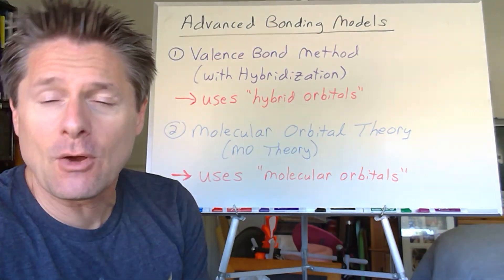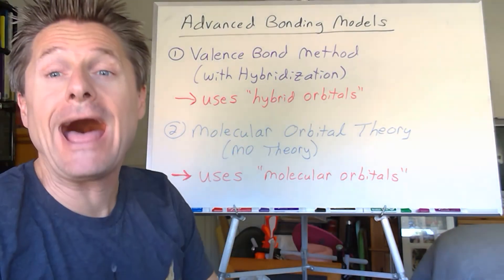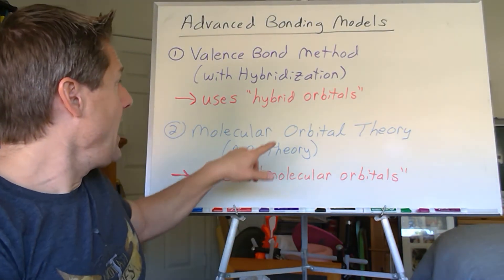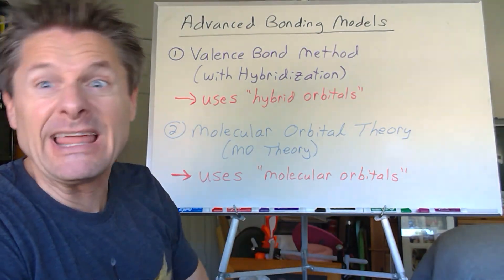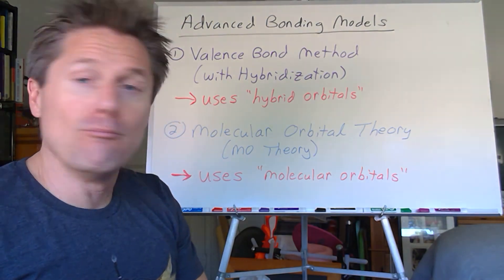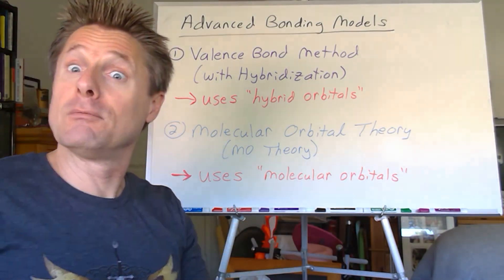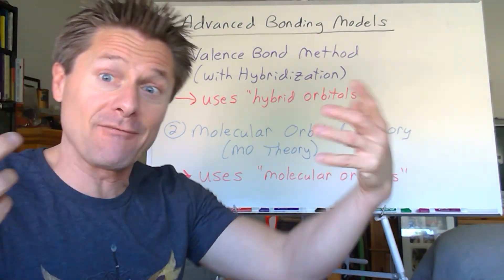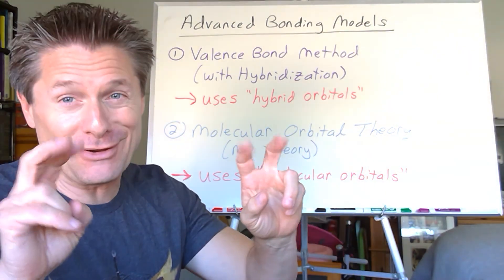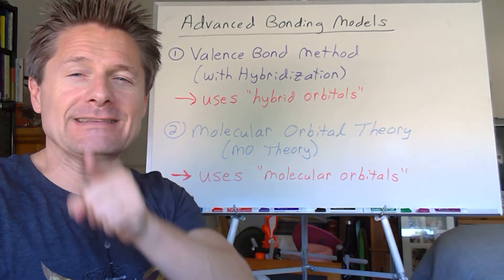The first more sophisticated model will be the valence bond method with hybridization. Instead of using atomic orbitals overlapping, we're going to use hybrid orbitals - you'll learn those in the next video. Then we'll do probably the best model for explaining experimental data: molecular orbital theory, or MO theory. Instead of atomic orbitals or hybridized atomic orbitals, MO theory uses molecular orbitals - which makes sense because when atoms come together and form a molecule, they have molecular orbitals. We'll do electron configurations using molecular orbitals instead of atomic orbitals.